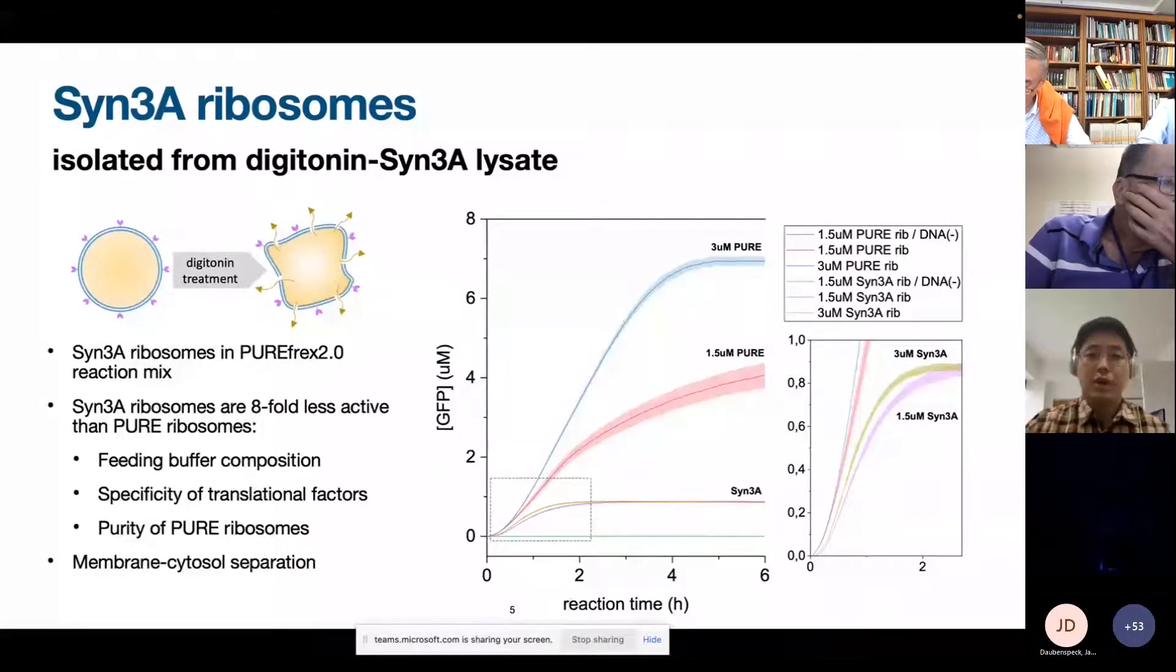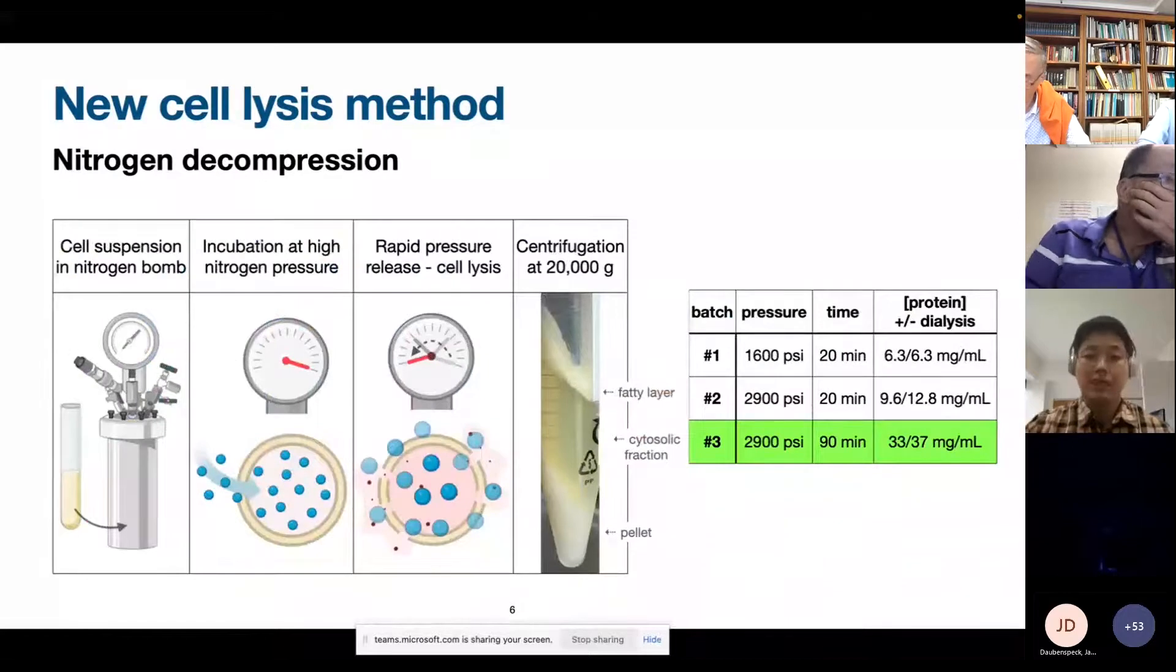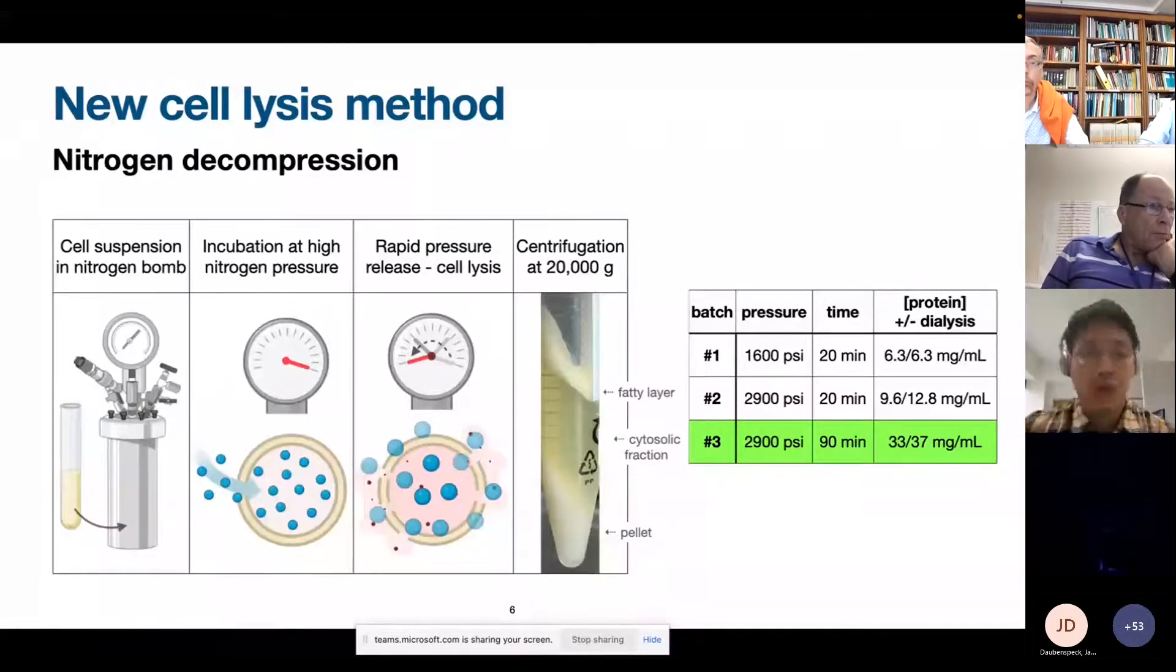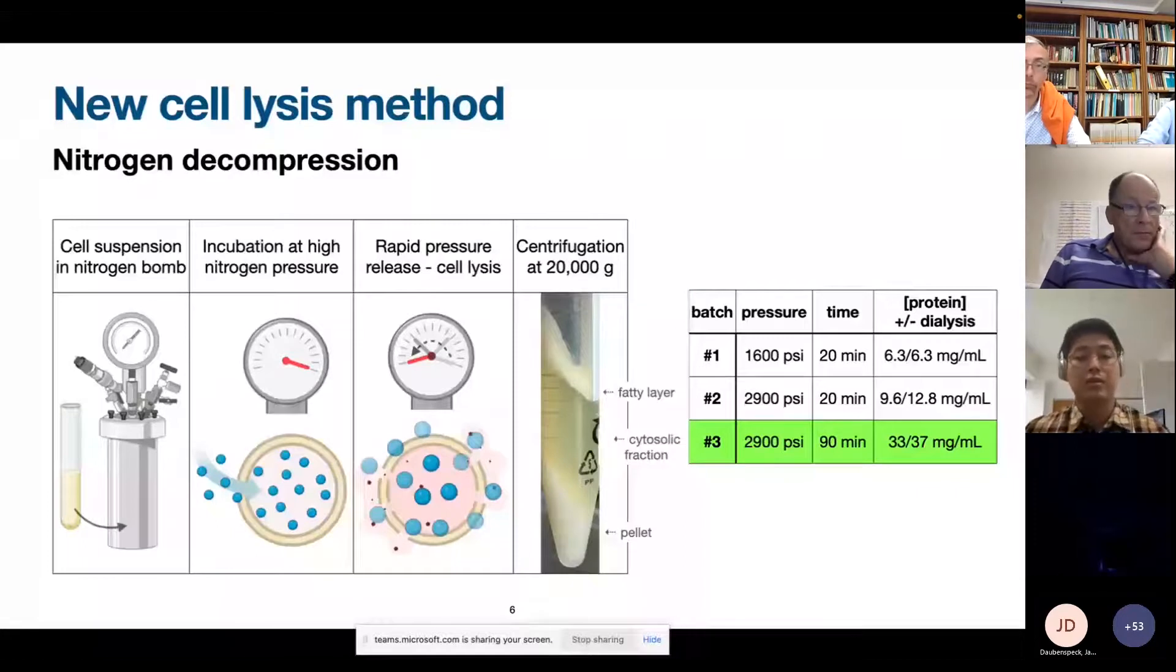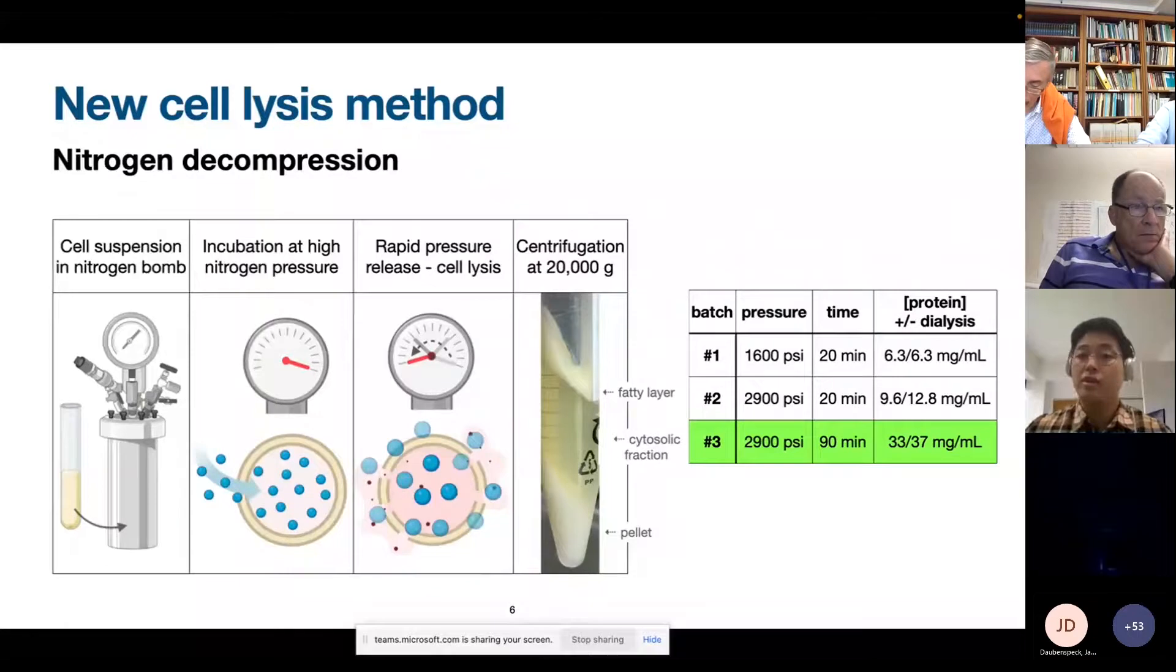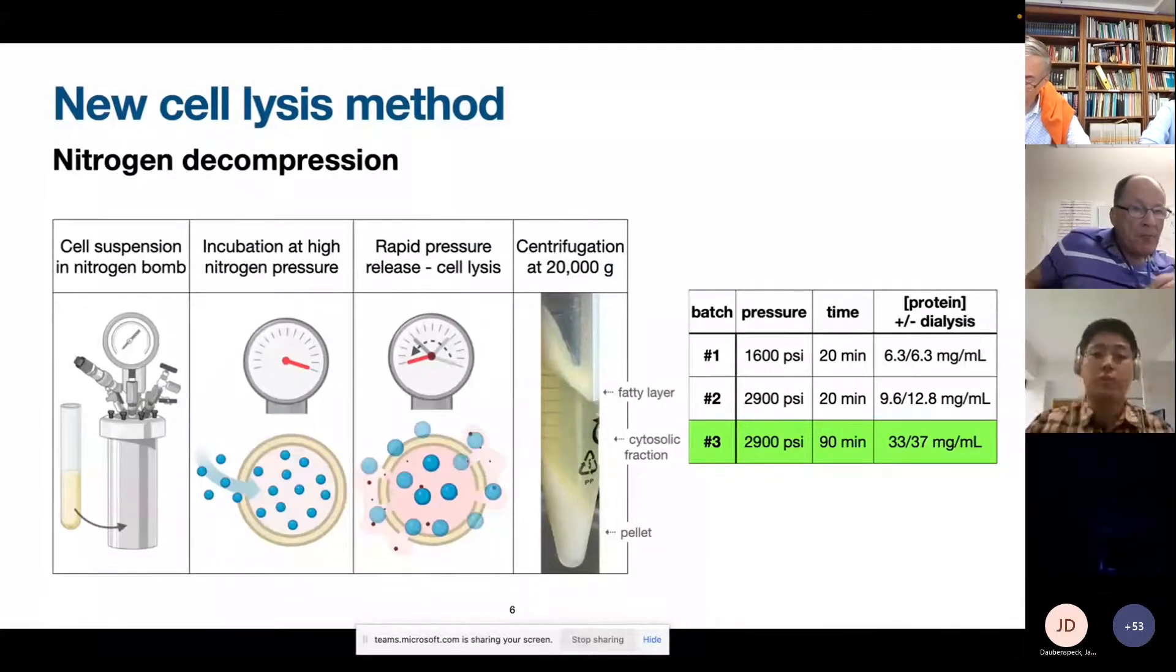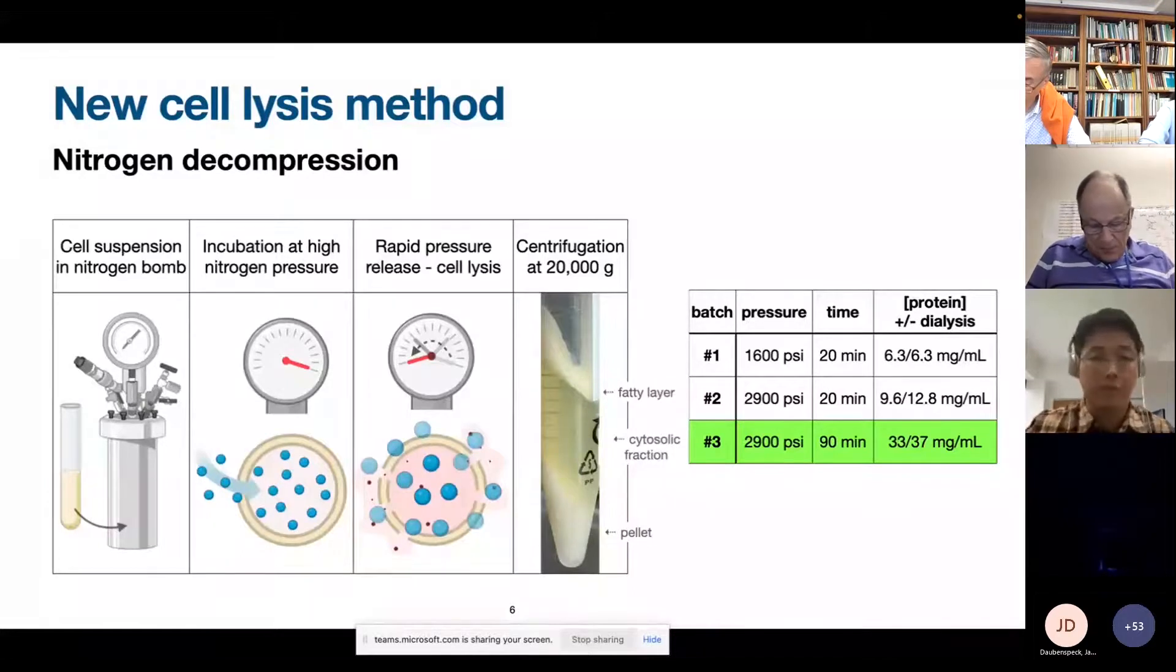So recently, we were testing also other lysis methods. So for example, this is a method called nitrogen decompression. I don't know if you're very familiar with that. It's a method usually used to lyse eukaryotic cells, not cells that have cell wall, for example, E. coli or bacilli. That doesn't work very well. So it needs to be just a lipid membrane with proteins, just like the membrane of mycoplasmas.